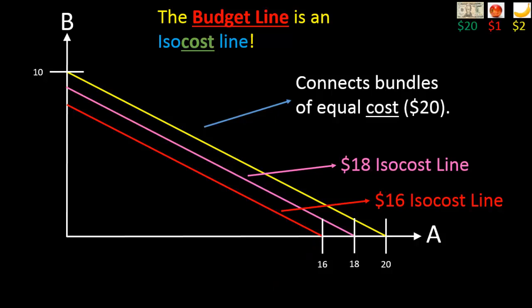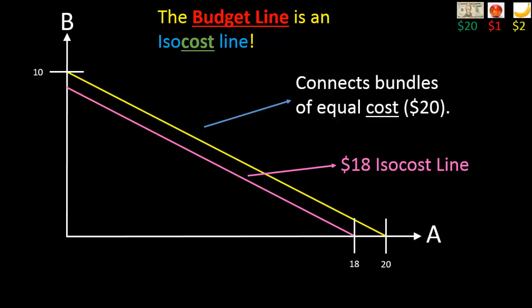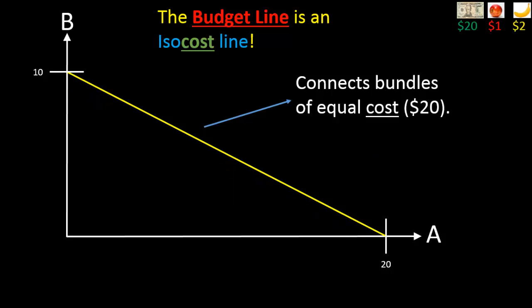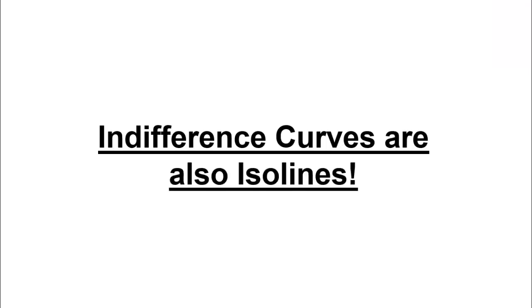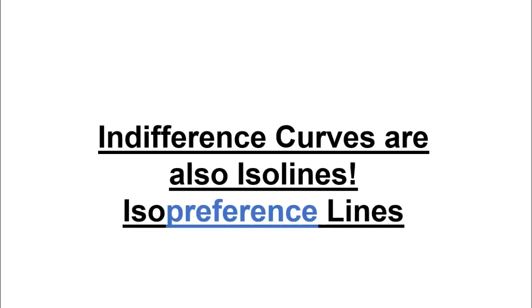But in general, we are not going to care too much about isocost lines other than the budget line itself. We don't care about the $16 or the $18 isocost lines. The only isocost line we'll care about is the budget line — the line where the consumer is spending all of his money. Now, if the budget line were the only example of an isoline in economics, I wouldn't have bothered talking about isolines at all. The real payoff comes when we talk about indifference curves. It turns out that indifference curves are also examples of isolines — in particular, they are what I would call isopreference lines.